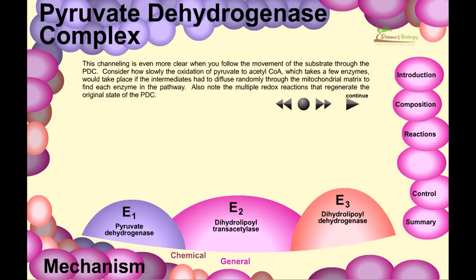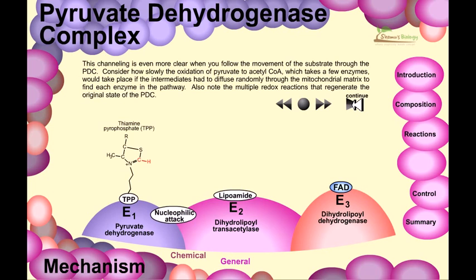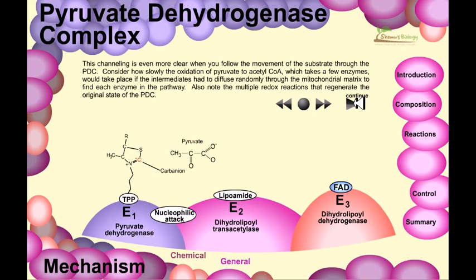Consider how slowly the oxidation of pyruvate to acetyl-CoA would take place if intermediates had to diffuse randomly through the mitochondrial matrix to find each enzyme in the pathway. Also note the multiple redox reactions that regenerate the original state of the PDC, which are very important. In the animation, thiamine pyrophosphate is present and hydrogen comes in again as pyruvate attaches.